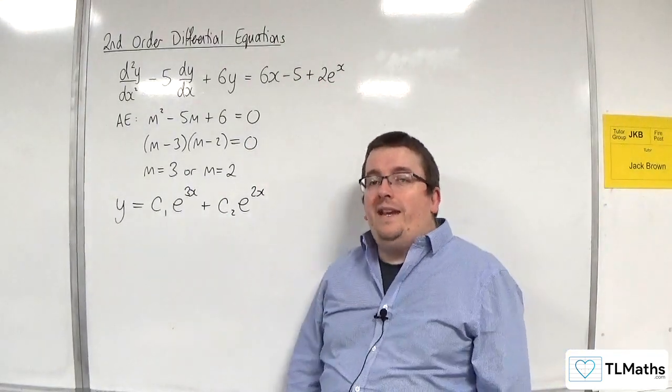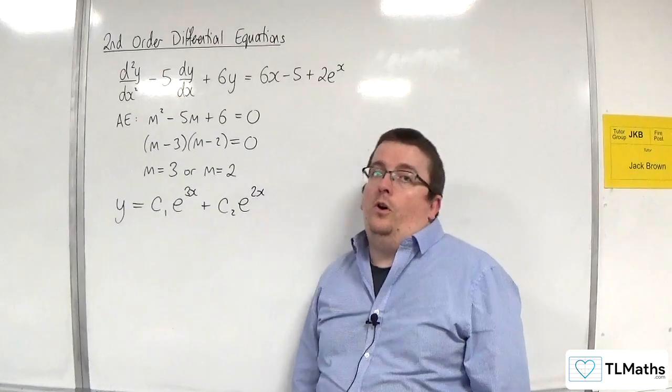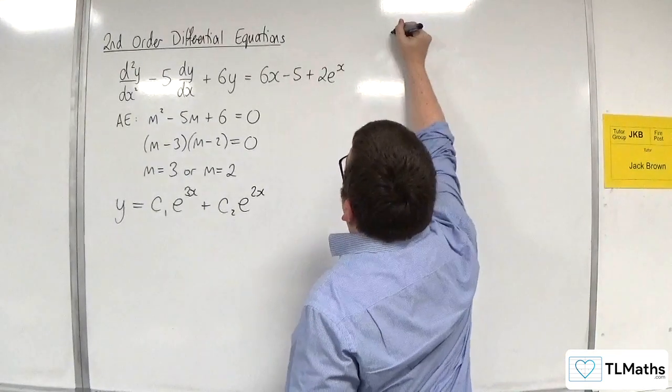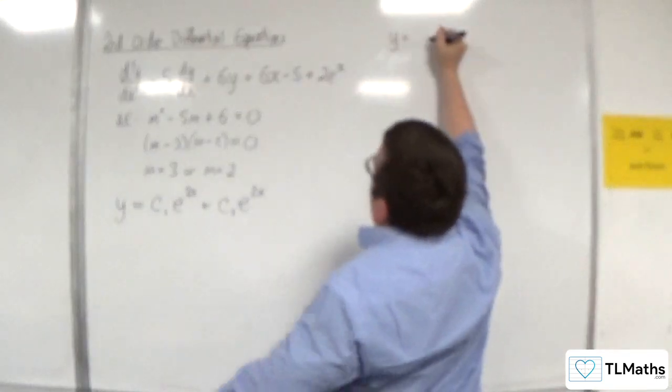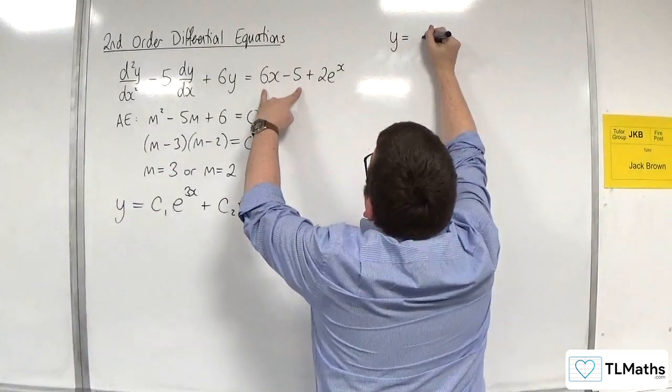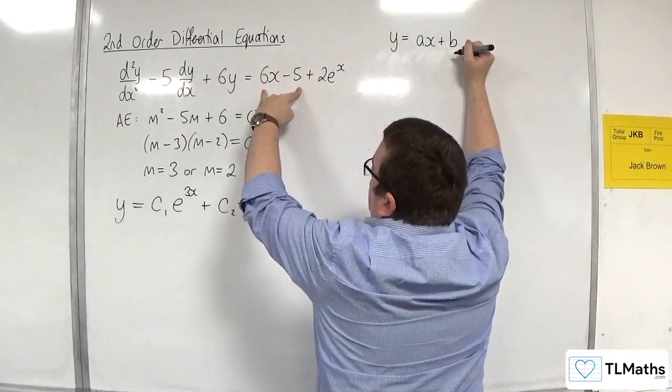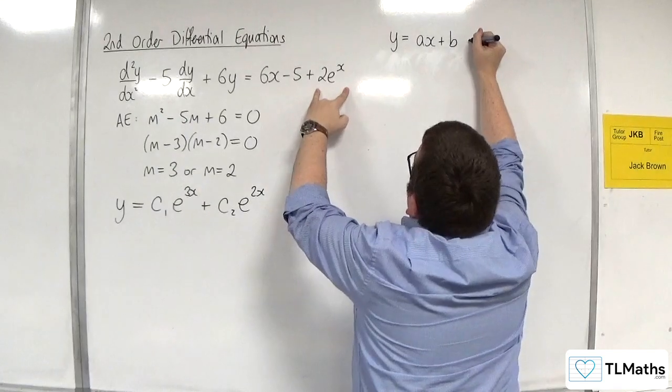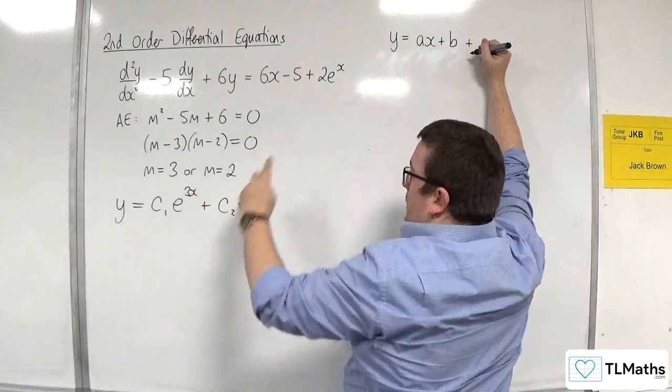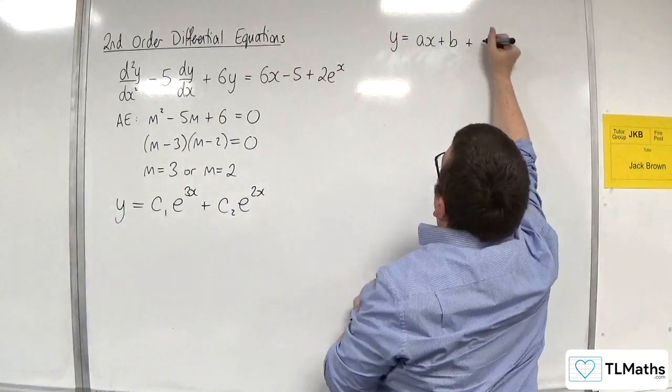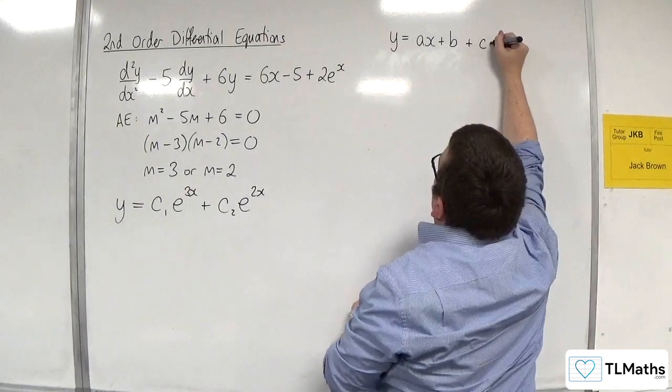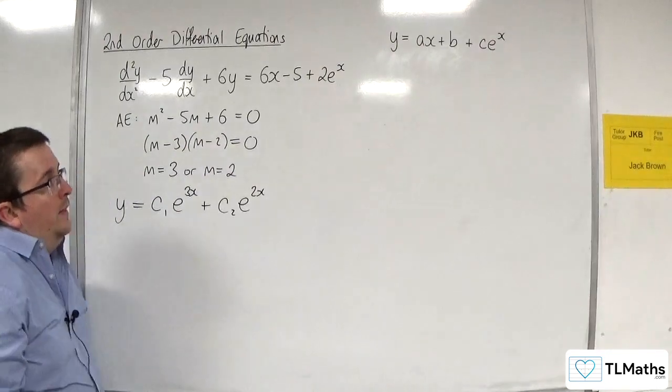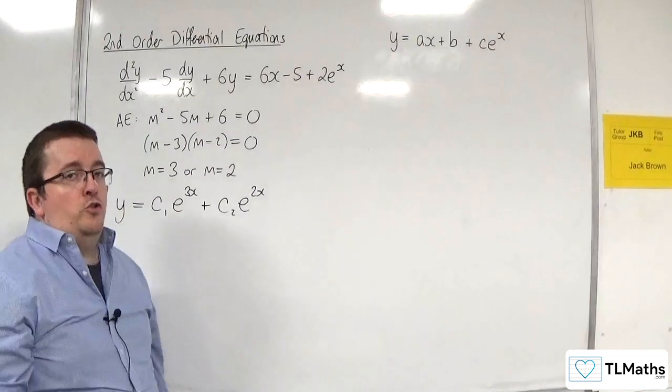So what we need to do is take account of both of these situations. With our trial function, we need to take care of the linear part, so have ax plus b, but we also need to take care of the exponential part. So I'm going to use c, so ce to the x. Okay, so this is going to be my trial function.